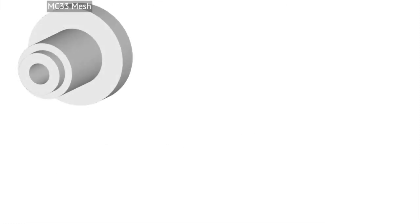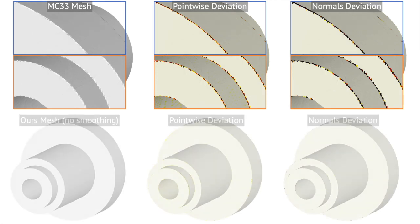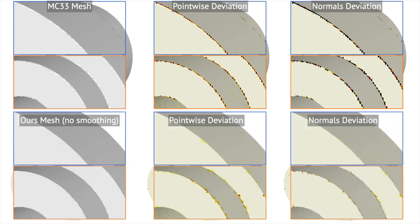Level-set meshes derived from implicit functions are blurred by isosurfacing. Their contours visibly deviate from true sharp features. Our method turns blurry reconstructions into feature-aligned surface meshes, minimizing distortions.